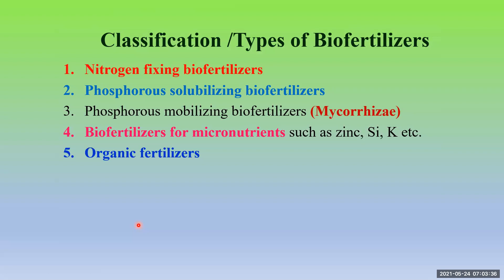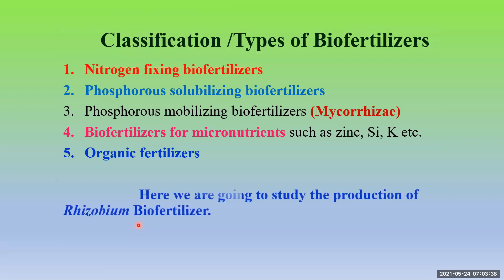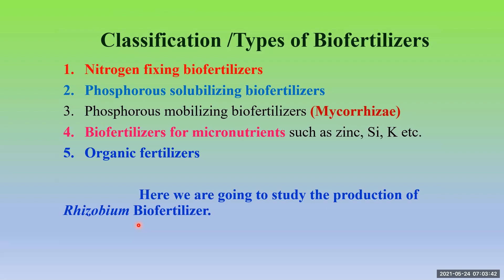Today we are going to discuss the production of Rhizobium biofertilizer — how to produce it in our laboratory. In this experiment, we have four major steps. Number one is preparation of starter culture.